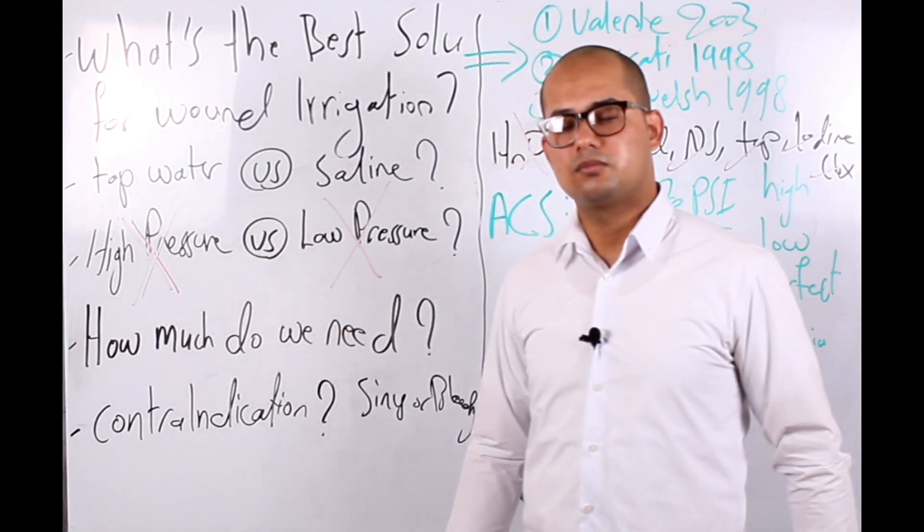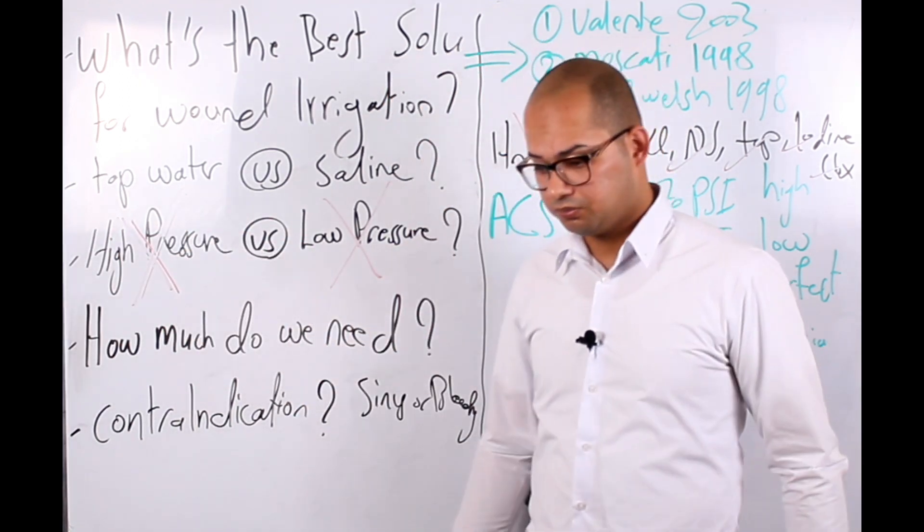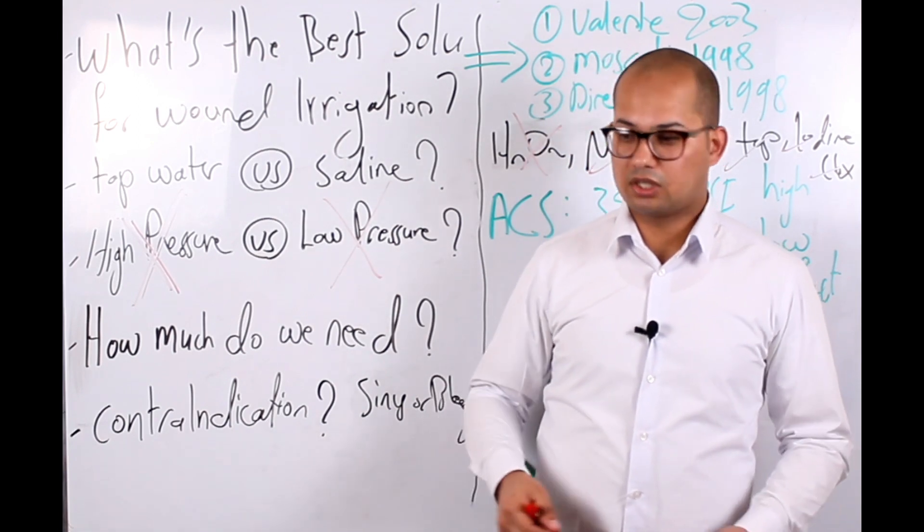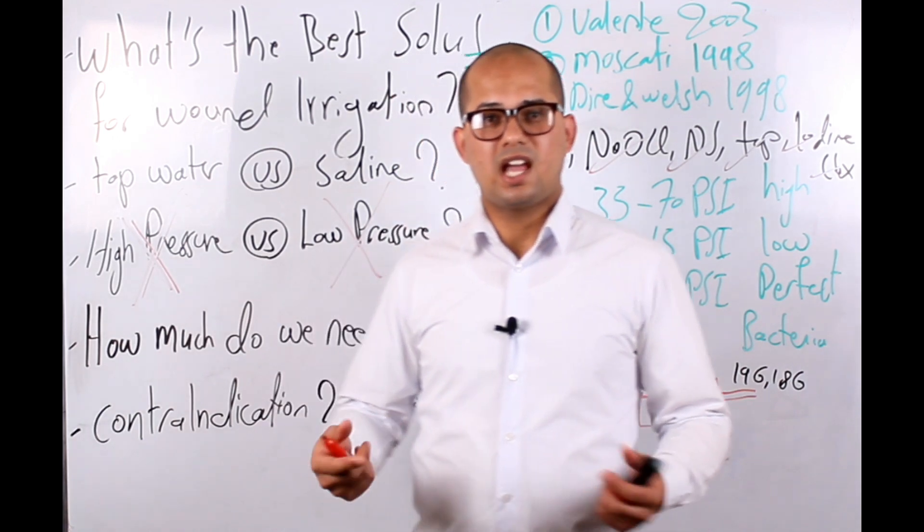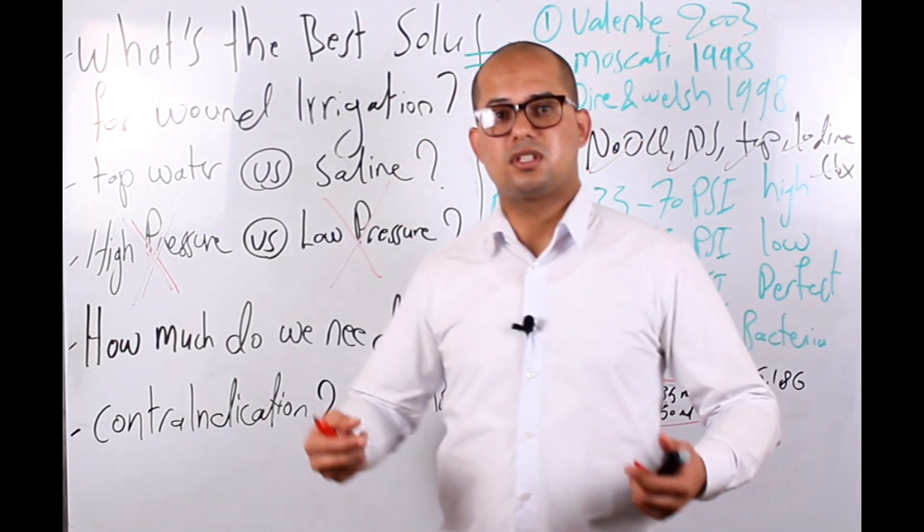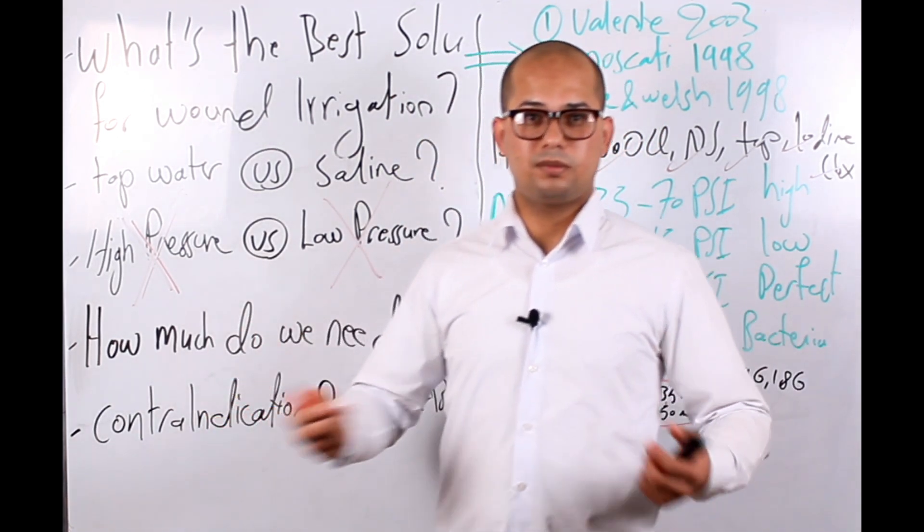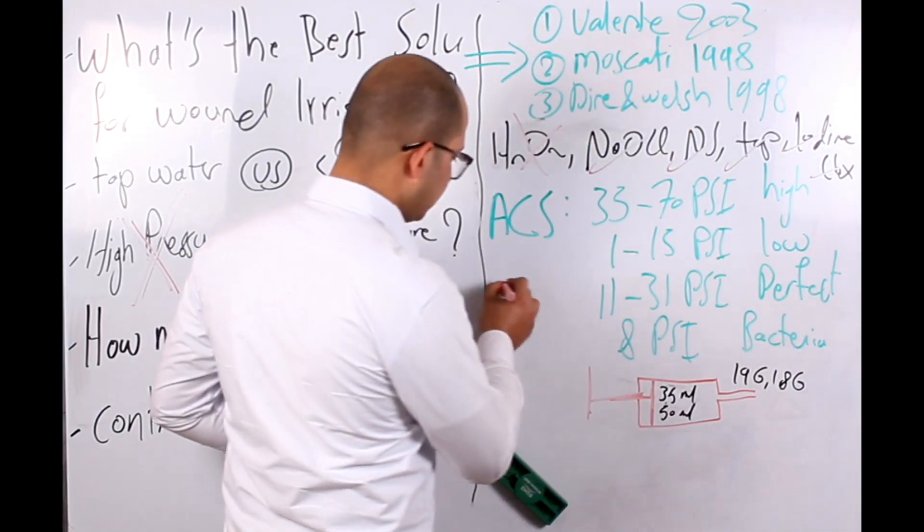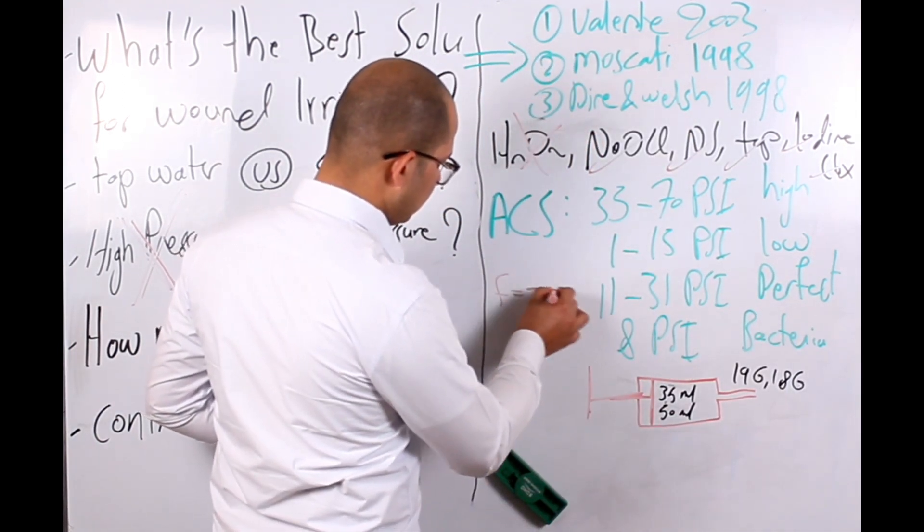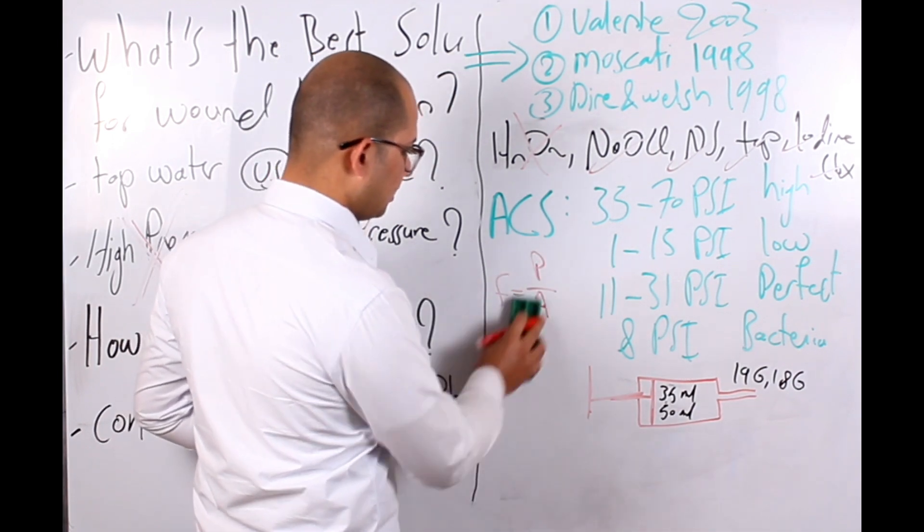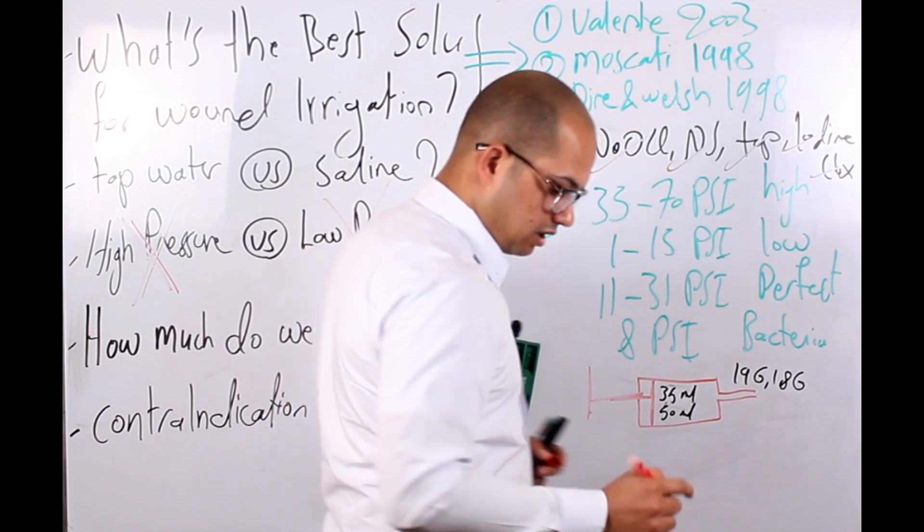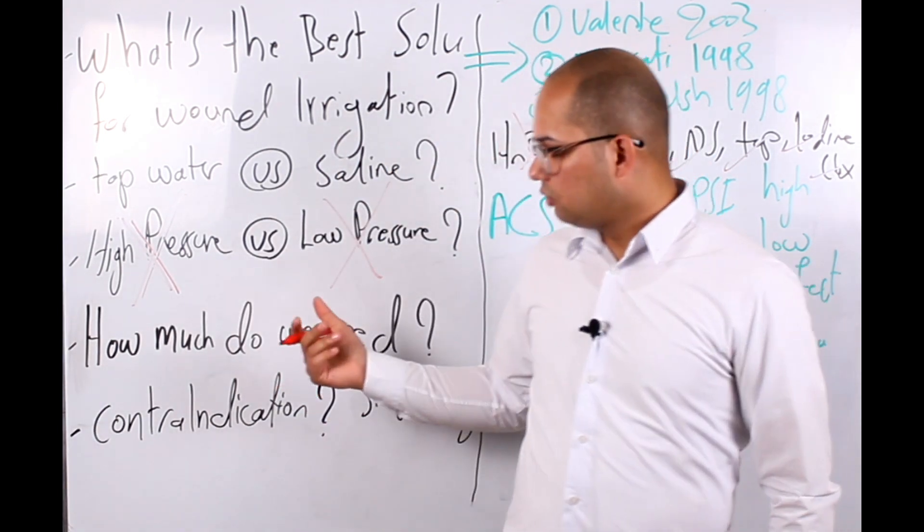What if we use low pressure? Irrigation under low pressure - you may not have enough force to dislodge the bacteria. As we all know, force equals pressure divided by area. If the pressure is increased, the force will be increased, right?